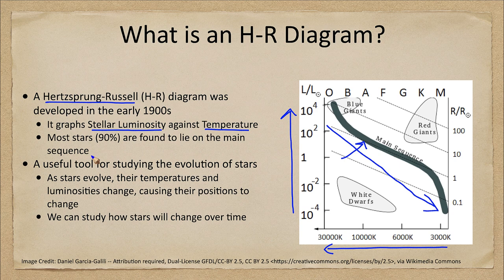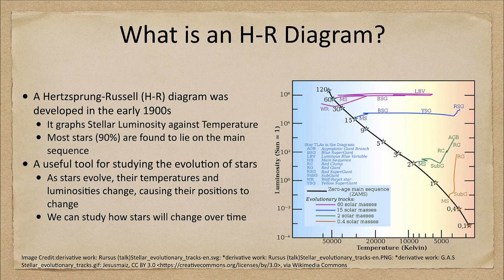What the main sequence is telling us is that is where stars spend the majority of their lives. Stars live a very long time, and therefore we only see a snapshot — one instant of them in their lives. By looking at a large census of thousands and thousands of stars and plotting their values together, we can get an idea of how common each type of star is. The more stars we catch on the main sequence, the more common that is, meaning stars spend about 90% of their lives there.